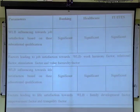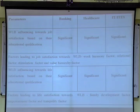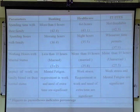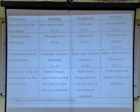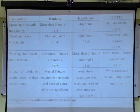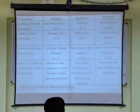For life satisfaction, family development factor, empowerment factor, and family factor are important. Spending time with family is not flexible in IT sectors. In banking, more than 6 hours are spent working due to limited working hours, leaving morning hours for family. In healthcare, 4 to 6 hours can be balanced for family, with night hours available. In IT, time with family is irregular — whenever permitted, employees spend time with family.